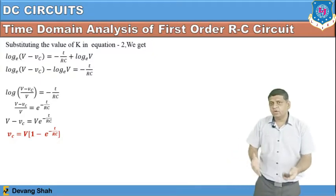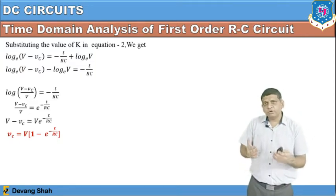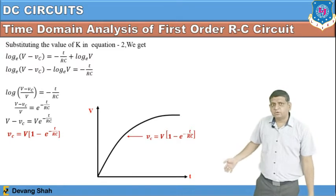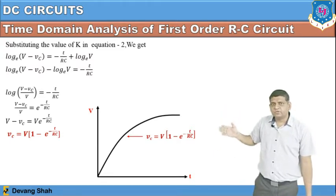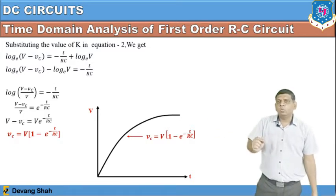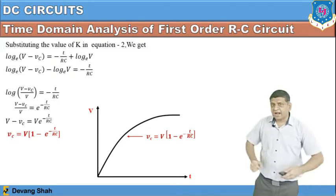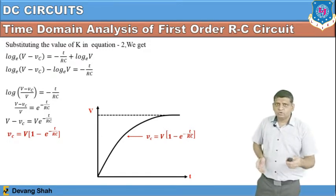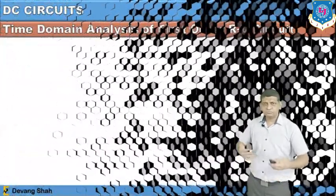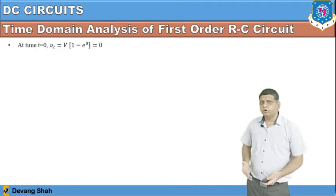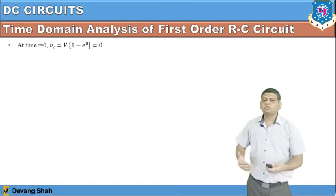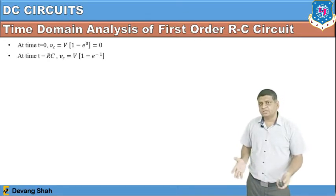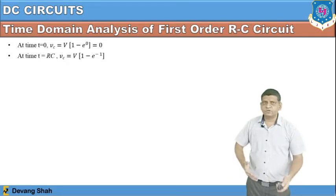This is a very important equation. The exponential term in the equation means that when you plot the voltage drop across the capacitor with respect to time, you get an exponential curve. The charging voltage follows V_C = V(1 - e^(-T/RC)), where RC is defined as the time constant.